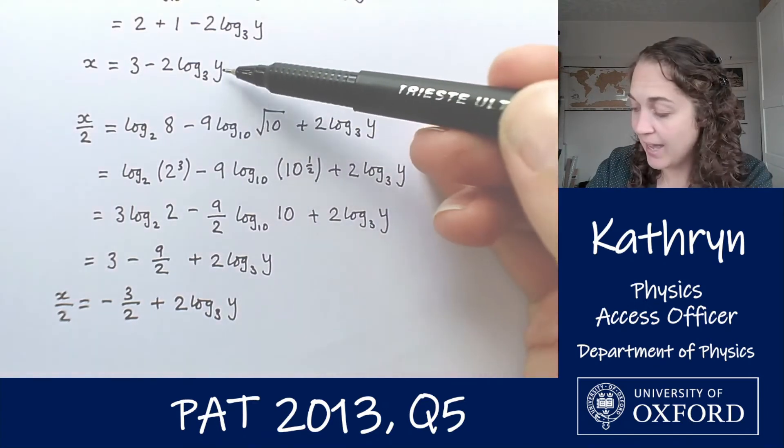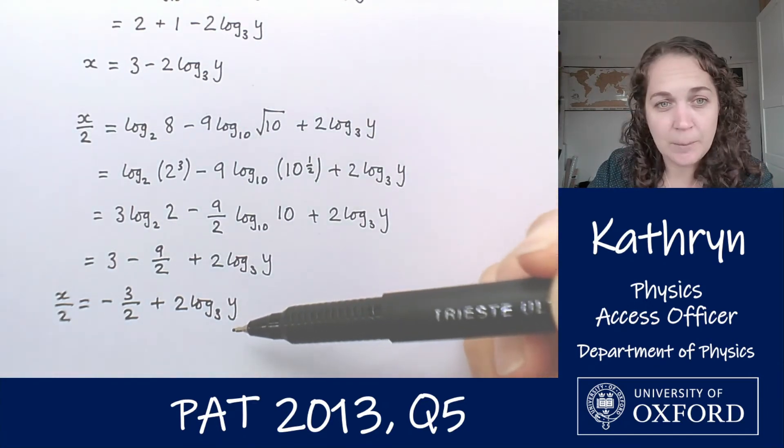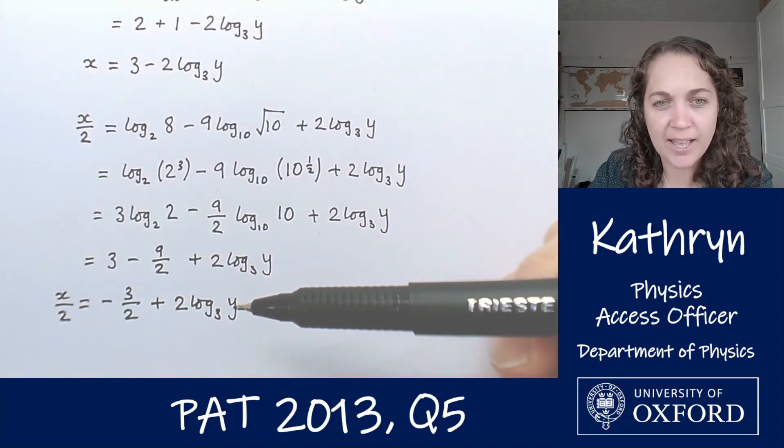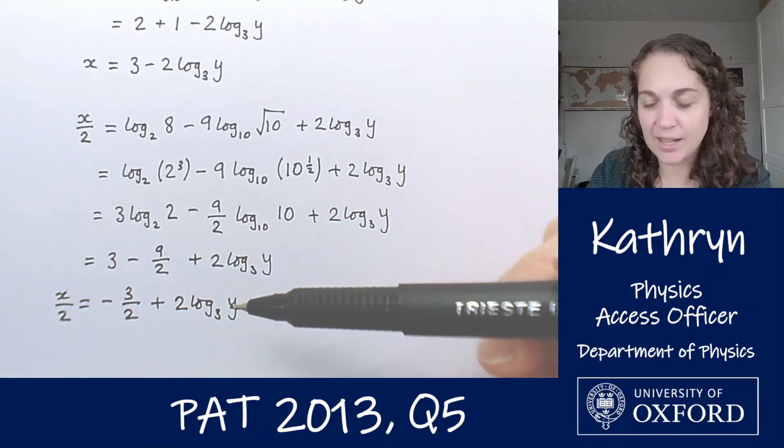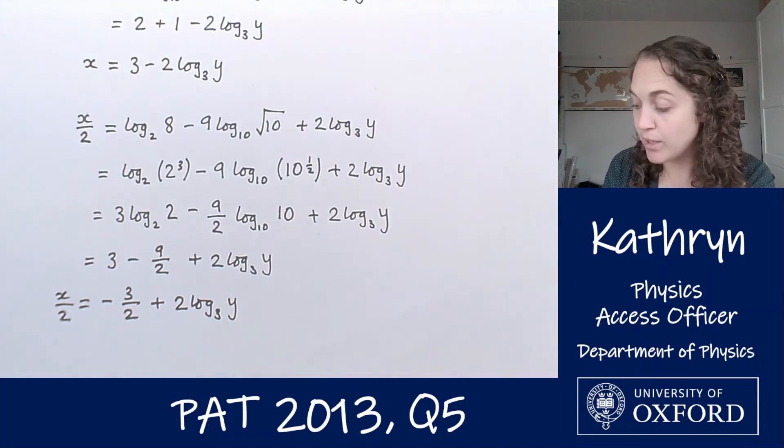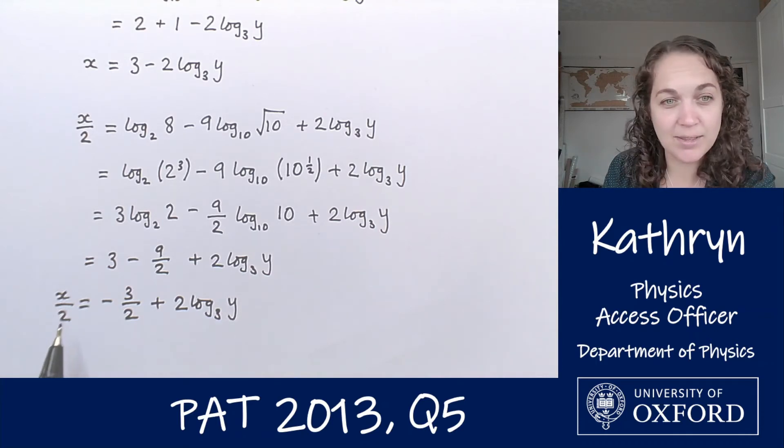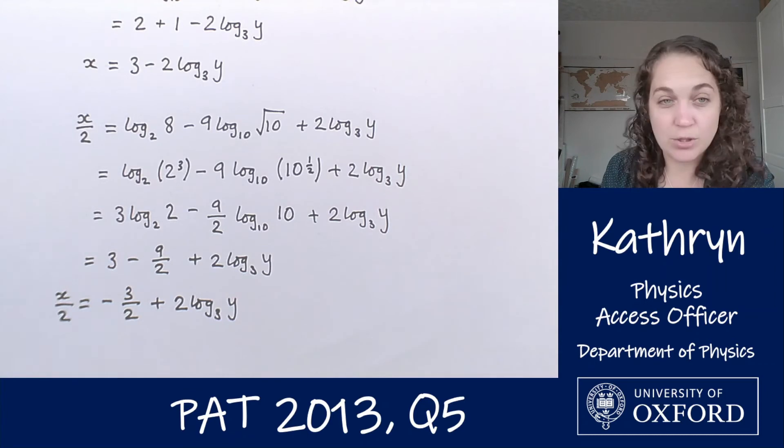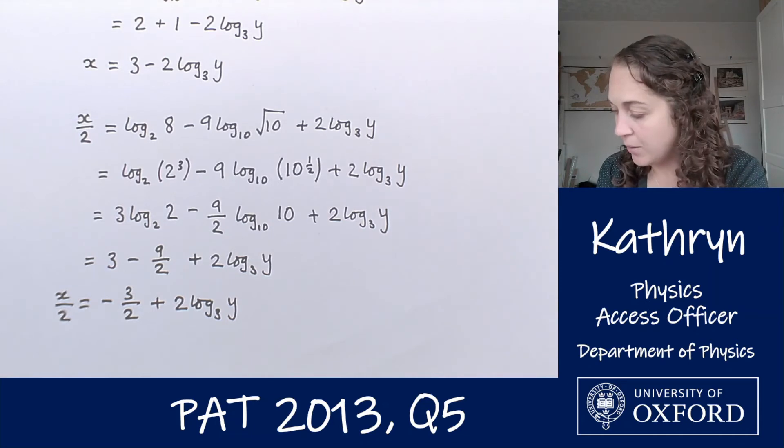One route from here would be to add this equation to this equation, that would lose that 2 log y term and we could solve for x and then substitute back in to get y. Alternatively we could multiply this equation by 2 and then substitute through for x. Either will work.